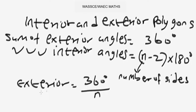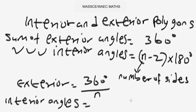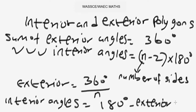We use the formula 360 over n to find the number of sides from the exterior angle. For the interior angle, we use the formula: interior angle equals 180 degrees minus the exterior angle. Take note of these formulas — they are very, very important because we are going to use them to solve problems now.